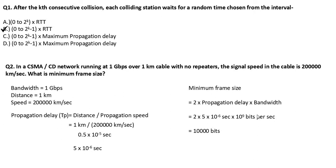We have 10^(-6) × 10^9 = 10^(9-6) = 10^3... wait, combining: 2 × 5 × 10^(-5) × 10^9 = 10 × 10^(9-5) = 10 × 10^4 = 10^5... Simplifying: 10^(-5) × 10^9 = 10^4 = 10,000. So the minimum frame size is 10,000 bits.